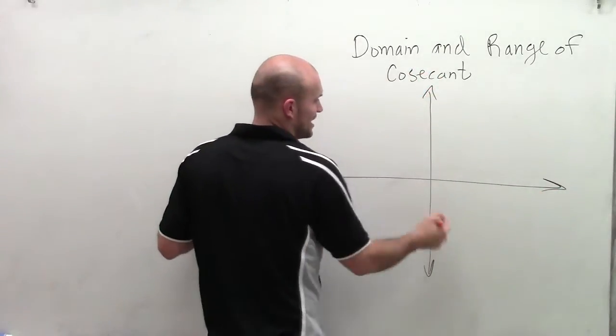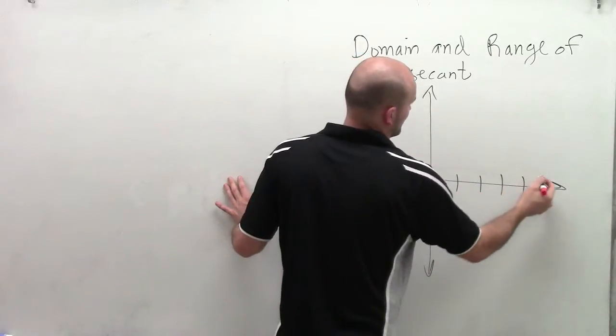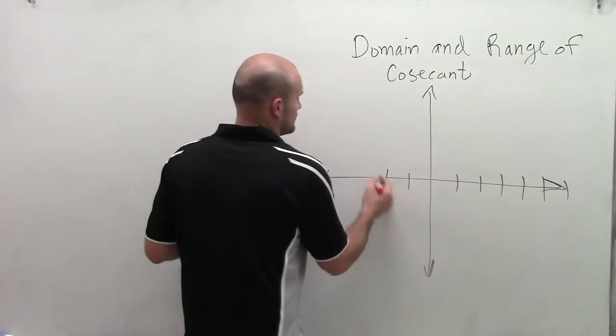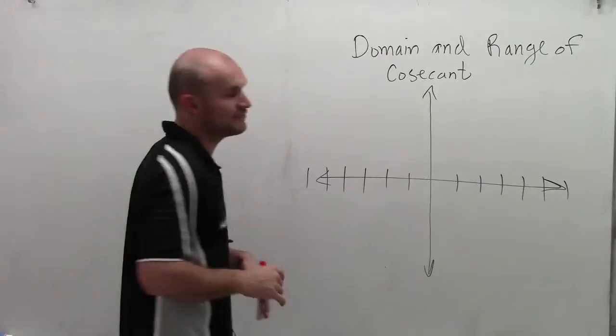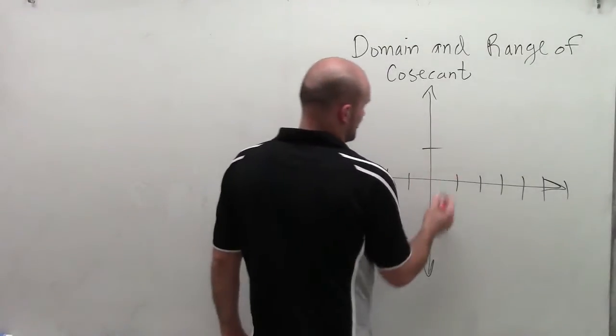So what I'm going to first do is just kind of number my axes 1, 2, 3, 4, 5, 6 in both directions. Then I'm going to graph the sine function up 1 to negative 1.